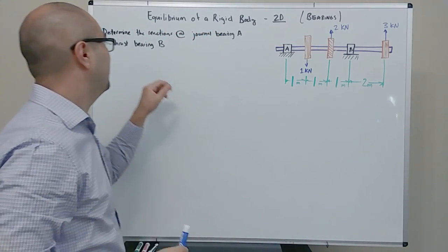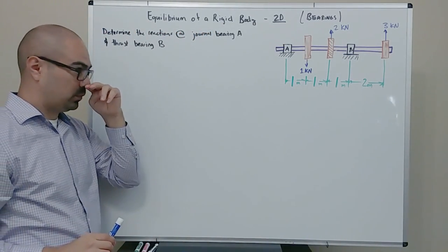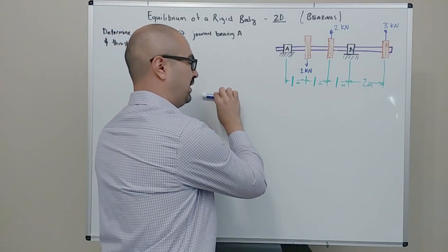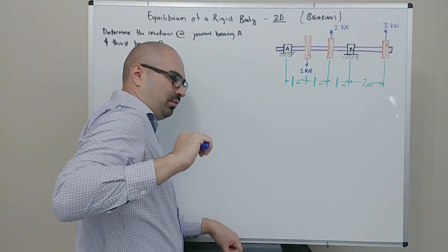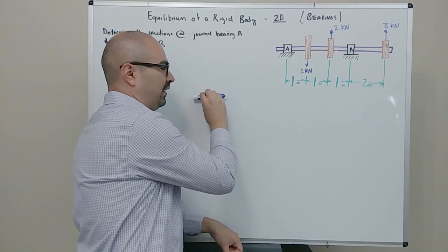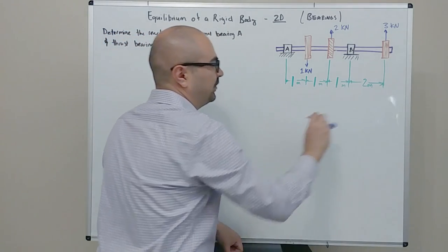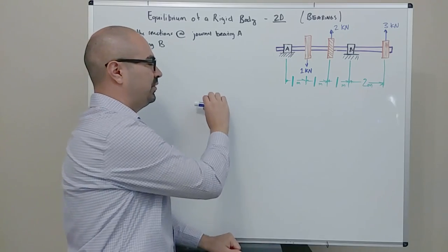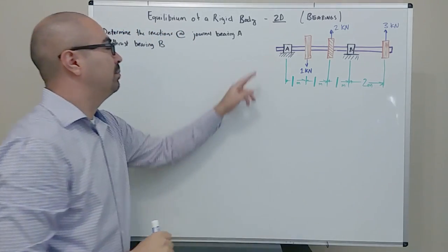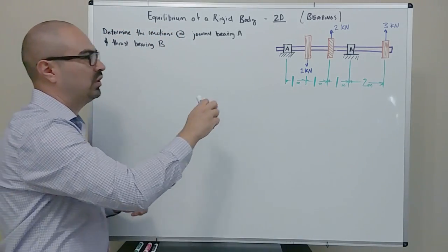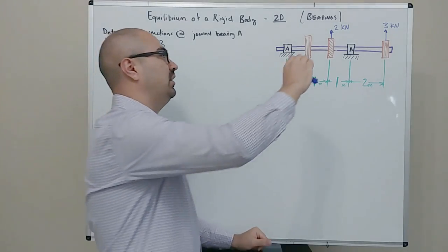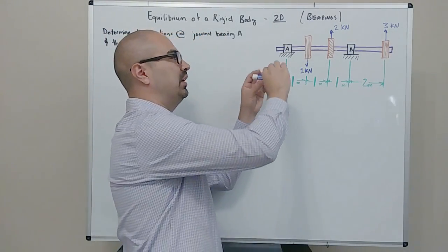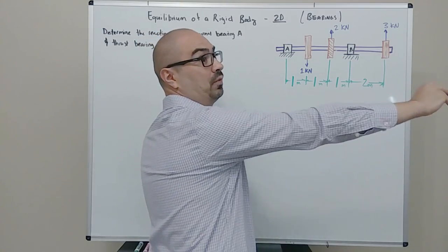That bearing is called the thrust bearing. One way I remember this: when an airplane is about to take off, the engines rev up to develop thrust, which moves it forward. In a bearing, a thrust bearing is one that does not allow the shaft to move forward — so it's kind of the opposite. It's keeping it from taking off.